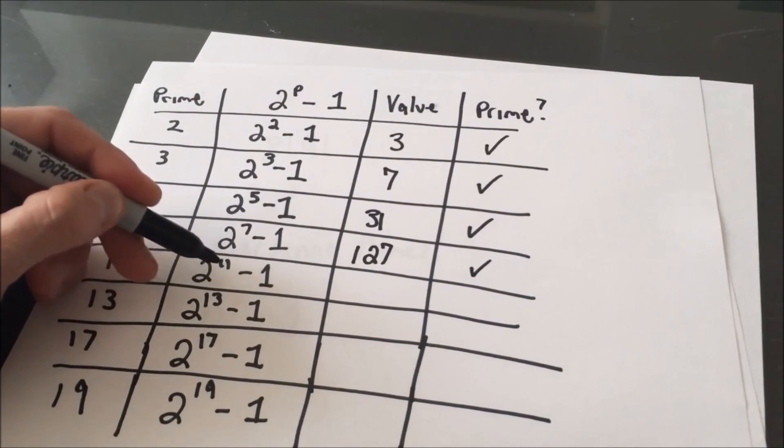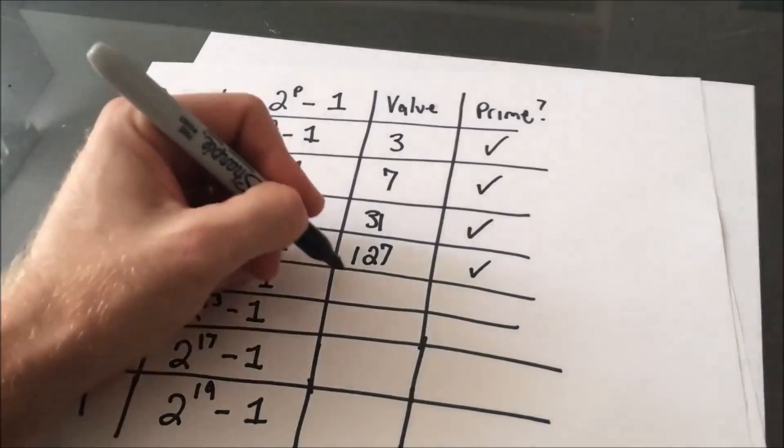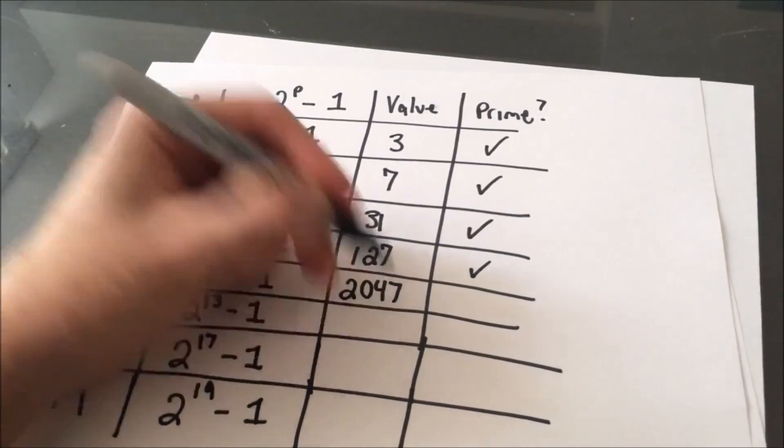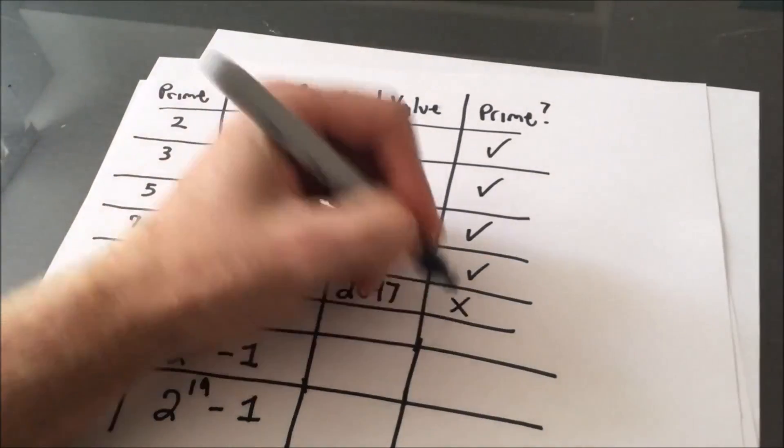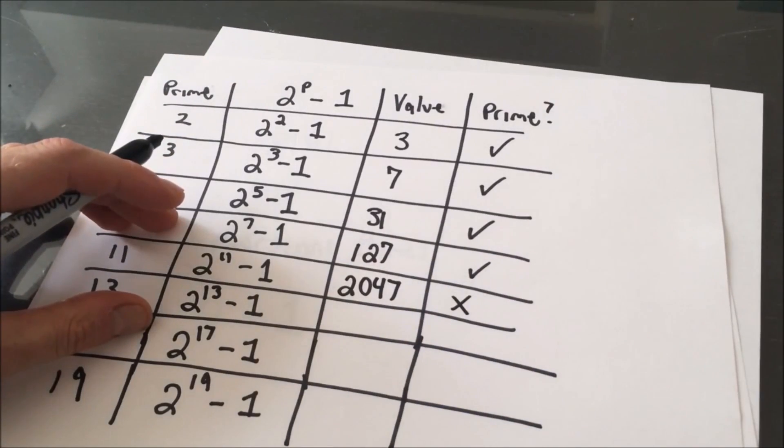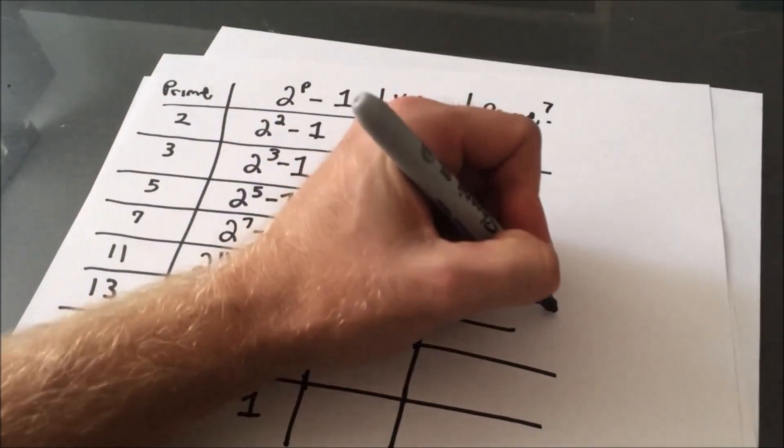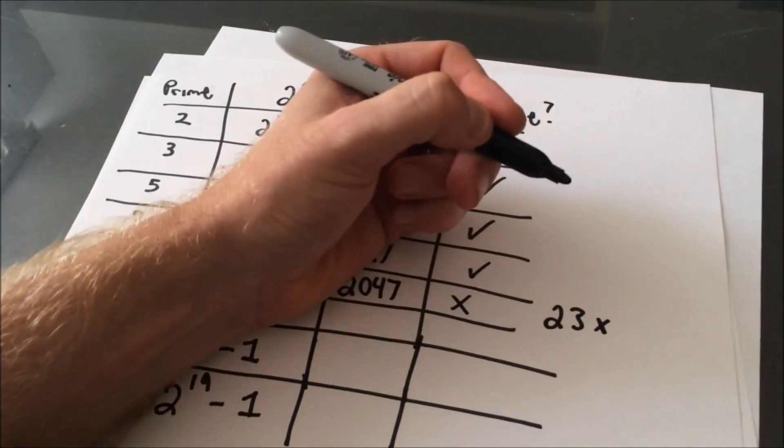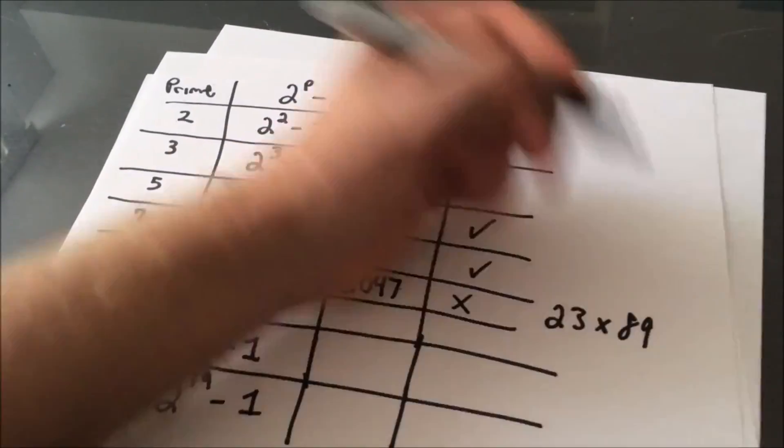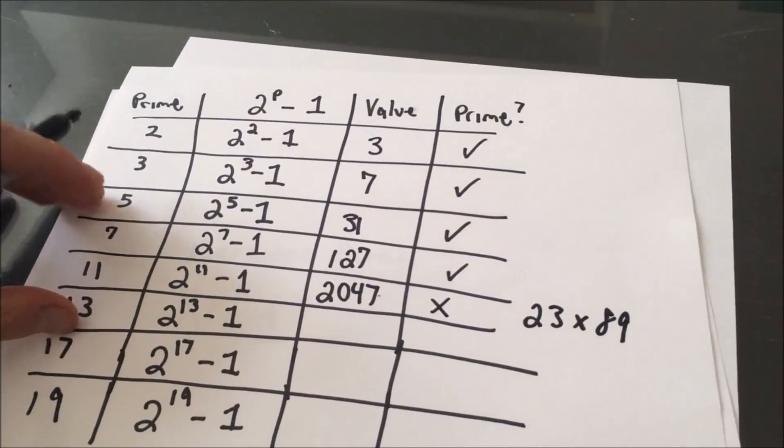Now we've got 2 to the 11th minus 1, that gives us 2047, which actually is not a prime number. It turns out that you can write 2047 as 23 multiplied by 89. So that's the first one here that's going to fail. But the rest of them in the list works.